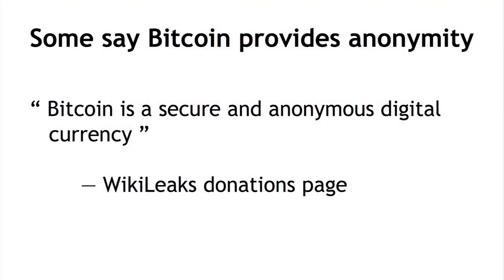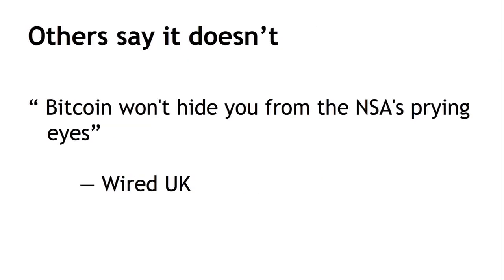If you look online, you'll see there are a number of people in groups saying that Bitcoin is anonymous. Let me just pull out one quote in particular — this is the WikiLeaks donation page. It says, in plain and simple terms, Bitcoin is a secure and anonymous currency. Is that actually true? Well, you'll also find a variety of opinions to the contrary. This is Wired UK saying, Bitcoin won't hide you from the NSA's prying eyes.